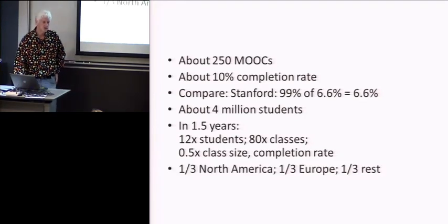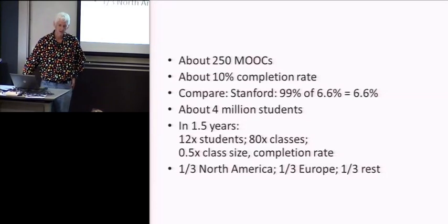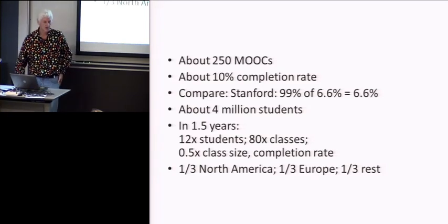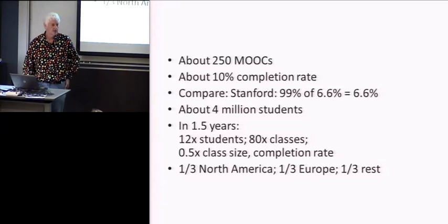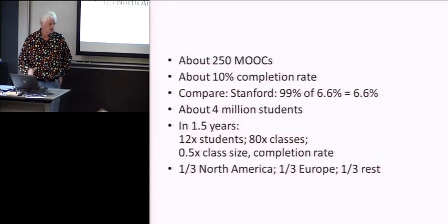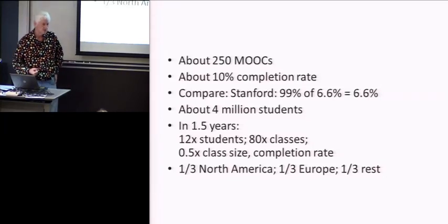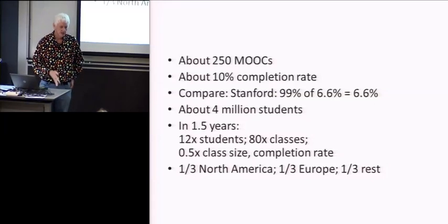So that means that the class size is going down and the completion rates is going down. But it's still very high growth, so I wouldn't worry about those numbers either. Looks like about a third North America, a third Europe, and a third the rest of the world. We joke that our class was big, it was biggest in the United States, and then beyond that it was in the typical BRIC countries: Brazil, Russia, India, and Canada.